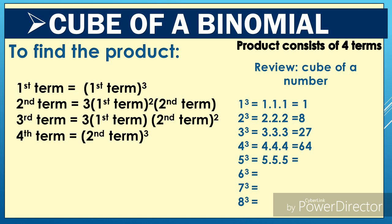Before we proceed, let's recall or review the cube of a number. For example, 1 cube equals 1 times 1 times 1, which equals 1. While 2 cube equals 2 times 2 times 2, and 2 times 2 is 4 times 2 is 8. While 3 cube equals 3 times 3 times 3, which equals 27. And 4 cube equals 4 times 4 times 4, which is 16 times 4 equals 64. Next, 5 cube equals 5 times 5 times 5. You're going to follow that pattern to solve the remaining cubes of numbers.